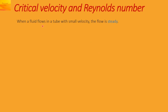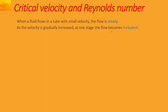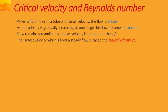When a fluid flows in a tube with a small velocity, the flow will be steady, or we call it a streamlined flow. As the velocity is gradually increased, at one stage the flow becomes turbulent. The flow will remain streamlined as long as the velocity is not greater than a value Vc, which we call the critical velocity. So the largest velocity which allows a steady flow is called the critical velocity Vc.